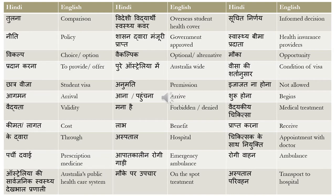'Chhatra visa' means student visa — you can also say 'vidyarthi visa,' as both 'chhatra' and 'vidyarthi' mean student, so either is acceptable. 'Anumati' means permission. 'Ijazat na hona' means not allowed or not permitted — 'ijazat' relates to permission, so 'ijazat lena' is to take permission, and 'ijazat na hona' means not permitted.